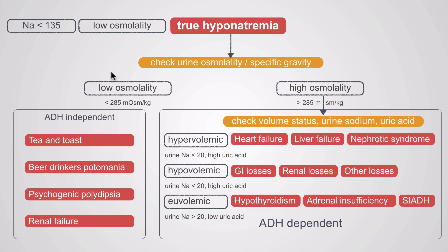One thing to be aware of: when we say experts can't differentiate volume status, we don't mean they can't differentiate hypervolemic from hypovolemic. We mean they have a hard time differentiating euvolemic from hypovolemic, or euvolemic from hypervolemic. With clinical background, people shouldn't have too much trouble distinguishing decompensated heart failure from diarrhea, but situations where SIADH is part of the differential do become a bit more tricky.